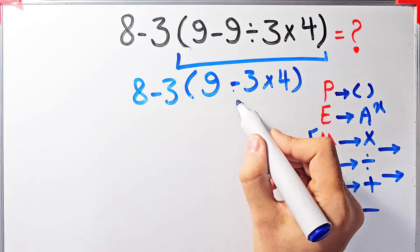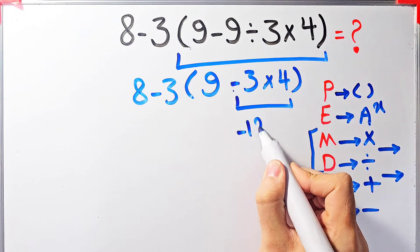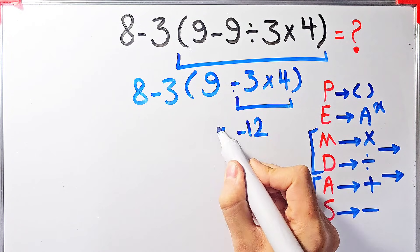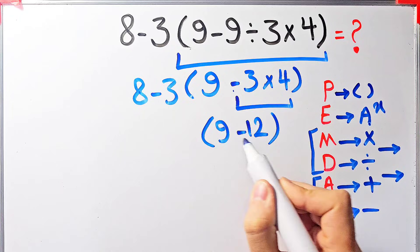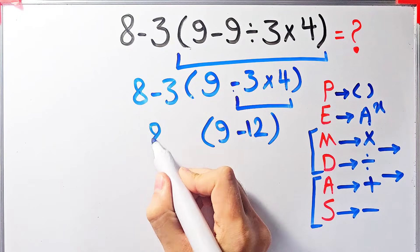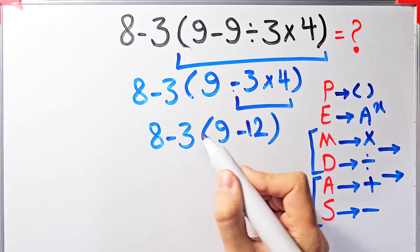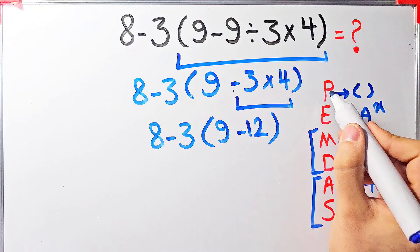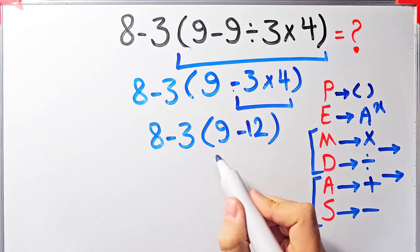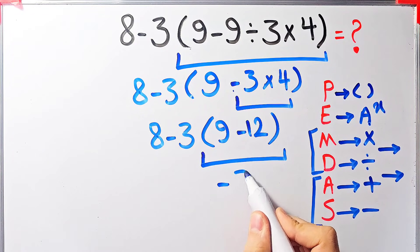Negative 3 times 4 equals negative 12. Now we have 9 minus 12 inside the parenthesis, and the expression is 8 minus 3 times the parenthesis containing 9 minus 12.